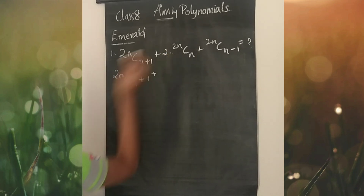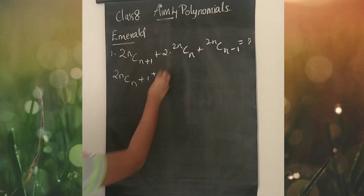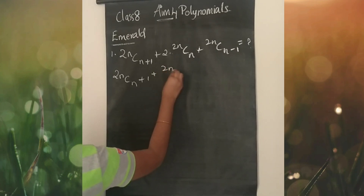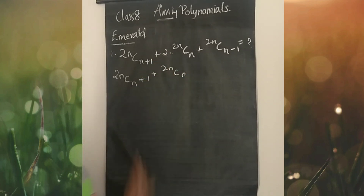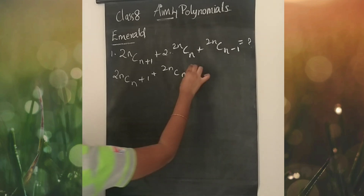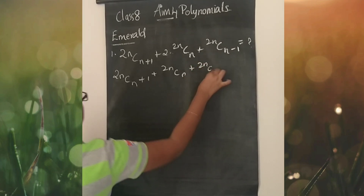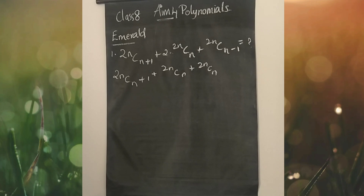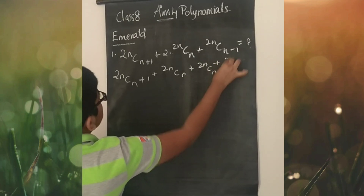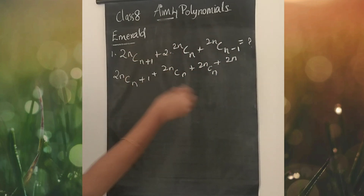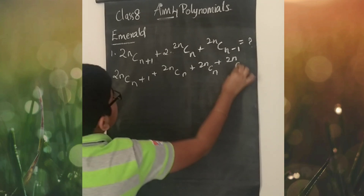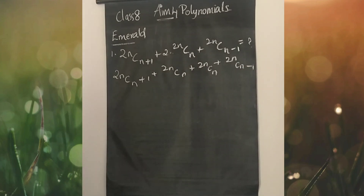Plus, here we are doing something — that is 2nCn — because 2 into is there, that's why we are doing that. Plus 2nCn. We multiplied the 2 into. Plus 2nCn-1.